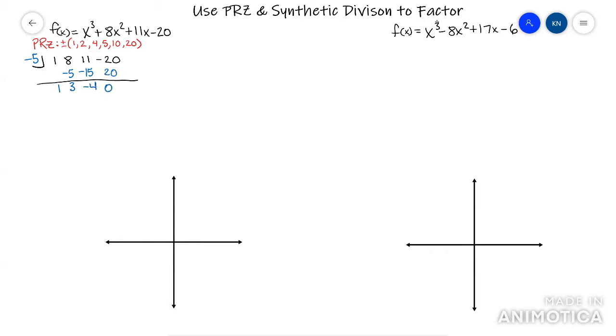Okay, I plugged in negative 5 and I got a zero remainder. This means negative 5 is one of my factors. I mean one of my zeros.